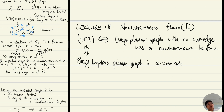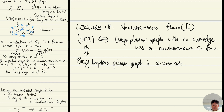So every loopless planar graph is four-colorable. When you take a geometric dual, you deduce the statement that every planar graph with no cut edge has a nowhere-zero 4-flow. This is one of the major motivations to study nowhere-zero k-flows — instead of thinking of coloring, we may have a better chance studying nowhere-zero k-flows.